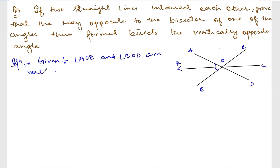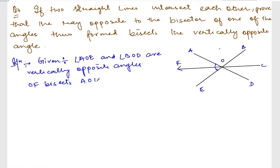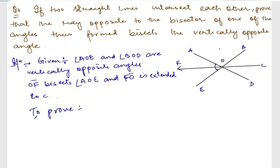Also given: OF bisects angle AOE, and FO is extended to C. To prove: angle BOC is equal to angle COD — meaning this opposite ray also bisects the vertically opposite angle.